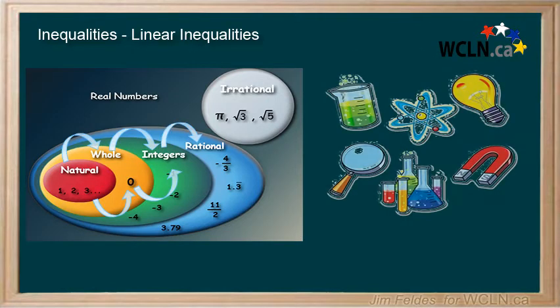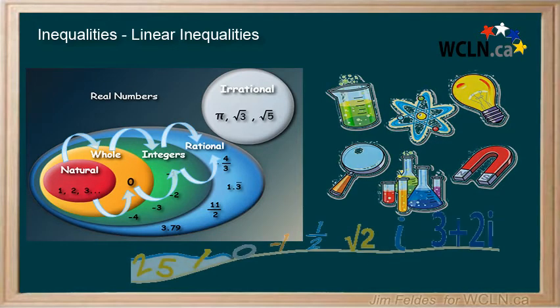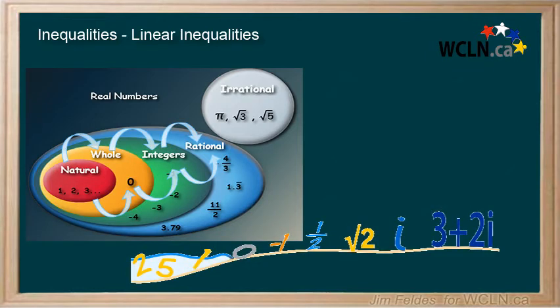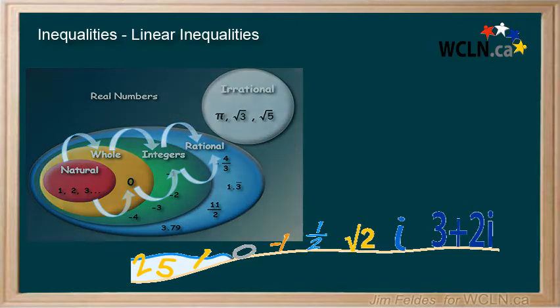With advancements in science and the requirement for accurate measurements, continuous data and rational numbers were needed. So once again, we see our number system evolving as needed to handle the growing complexity of our world.